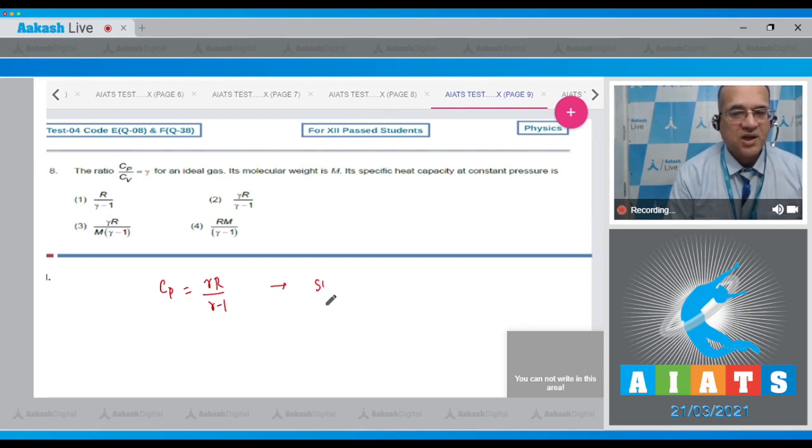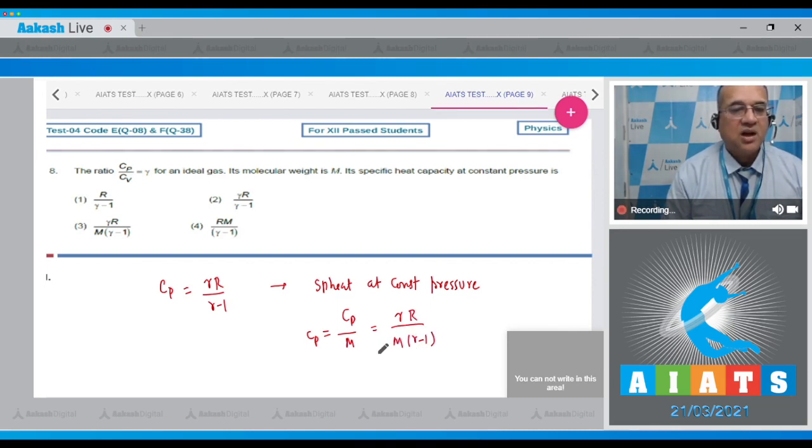But if you want to find out per gram, that is called the specific heat at constant pressure. So you have to divide by the molar mass, and that gives you the value of small cp. So this becomes equal to gamma R over M into gamma minus 1. And the correct option will be the third answer.